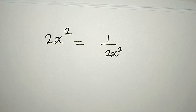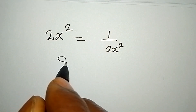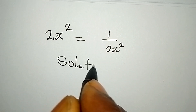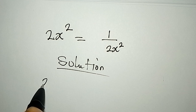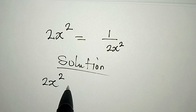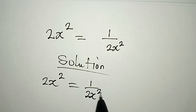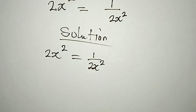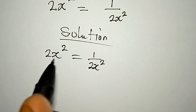Hello everyone, let's provide the solution to this problem. We have 2x squared equals 1 over 2x squared. Now some persons will be thinking they can cancel these terms, but that is not right.